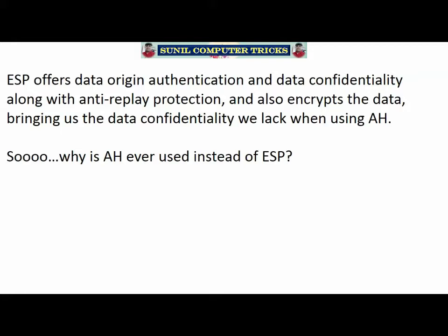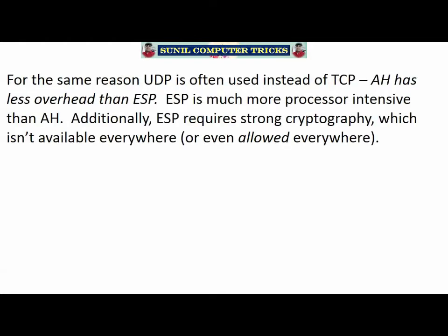ESP brings everything we could ever want: data origin authentication, data confidentiality, anti-replay protection, and data encryption. So why would we ever use AH instead of ESP? This should remind you of the TCP versus UDP discussion from your CCNA studies. UDP didn't have any of the great features that TCP had, but we use UDP every day for all kinds of things in our networks. Why? Overhead. That is one of the reasons you would choose AH over ESP — AH has much less overhead than ESP. ESP is much more processor-intensive; the encapsulation and de-encapsulation is a lot of extra work for the router.